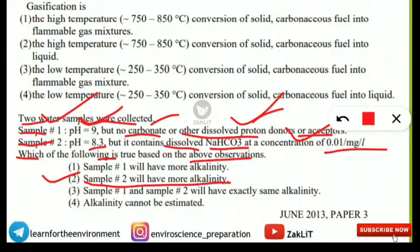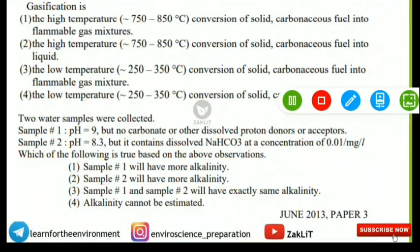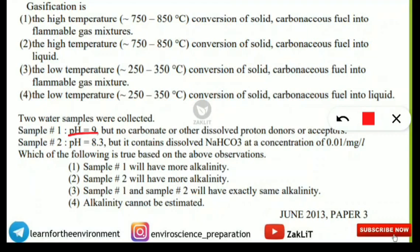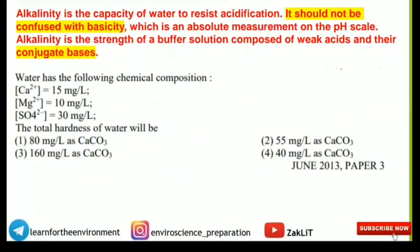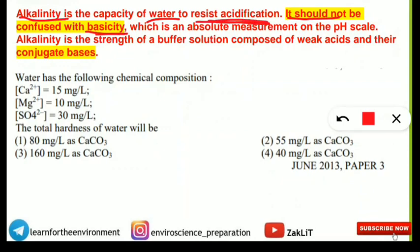The correct option is number two: Sample 2 has more alkalinity than Sample 1. Someone might say pH 9 is higher so Sample 1 has more alkalinity — but that is totally wrong. The concept is this: alkalinity and basicity are two different things. Most students confuse them, but they are different.